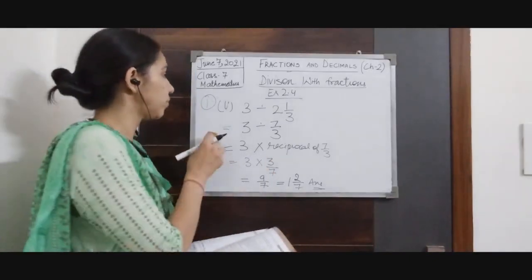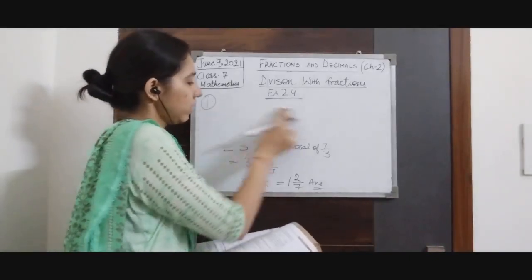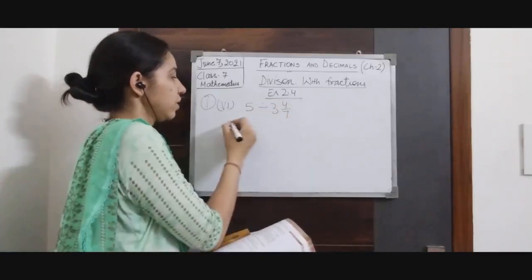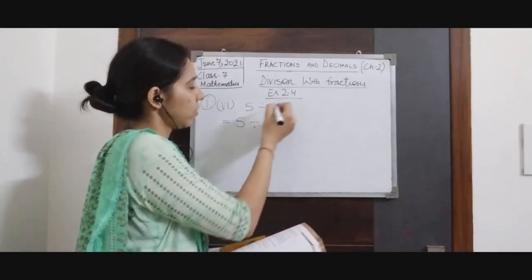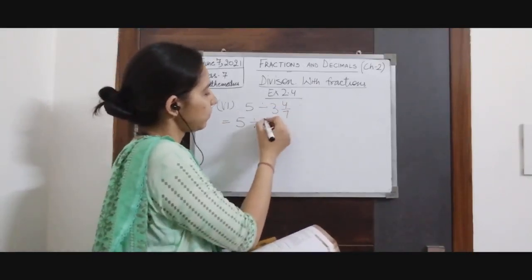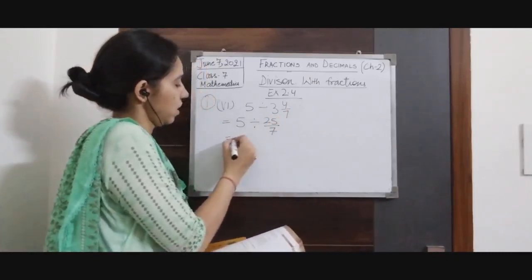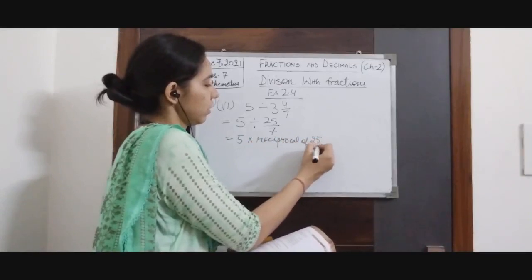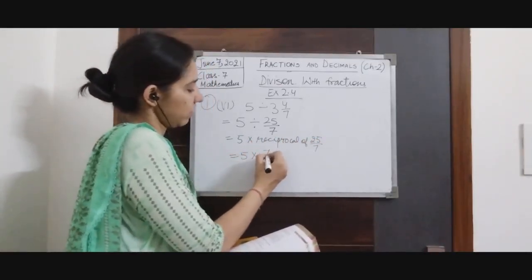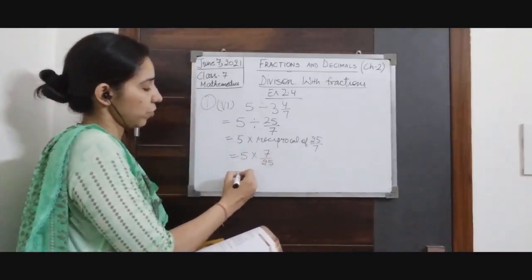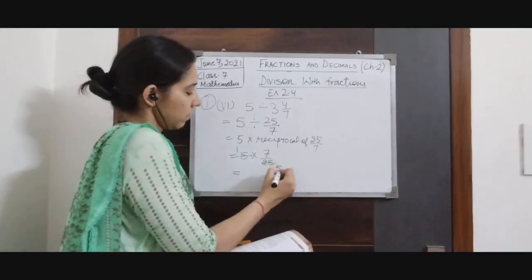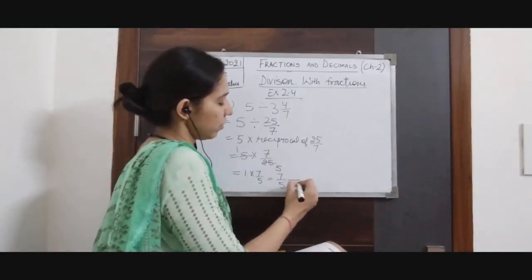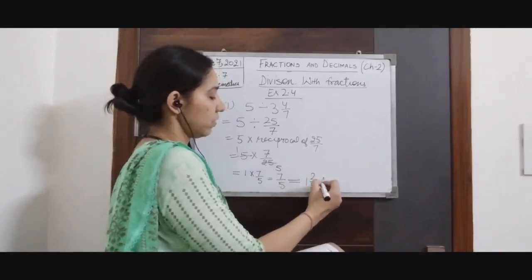We can also do part 6 to understand it completely. In part 6 we have 5 divided by 3 and 4/7. Convert the mixed fraction to improper fraction: 7 × 3 + 4 = 25, giving 25/7. It is equal to 5 × reciprocal of 25/7, which is 7/25. Cancel 5 and 25: gives 1 × 7 / 5 = 7/5. This is an improper fraction; convert to mixed fraction: 1 and 2/5. This is your answer.